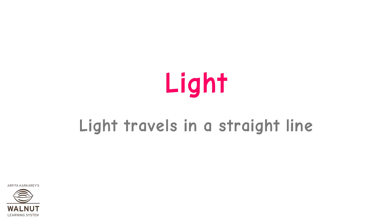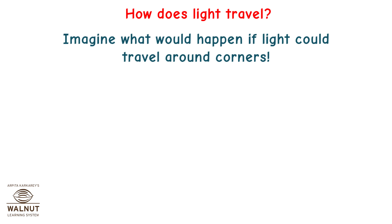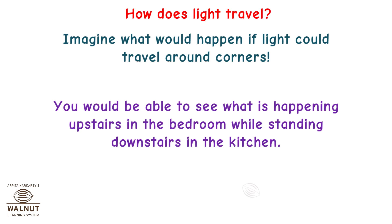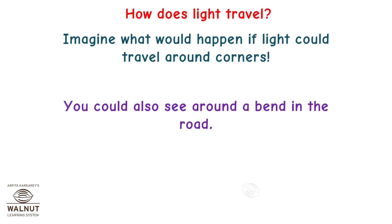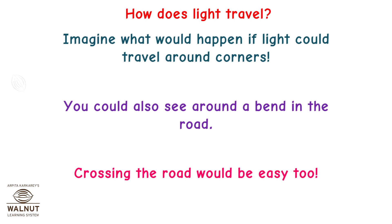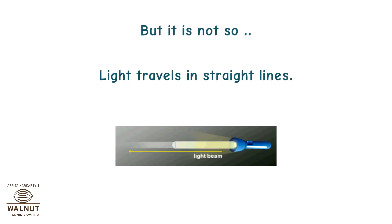Light travels in a straight line. How does light travel? Imagine what would happen if light could travel around corners. You would be able to see what is happening upstairs in the bedroom while standing downstairs in the kitchen. You could also see around a bend in the road. Crossing the road would be easy too. But it is not so — light travels in straight lines.